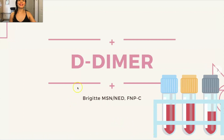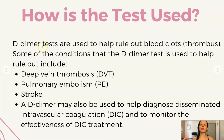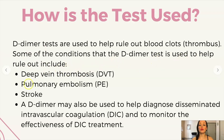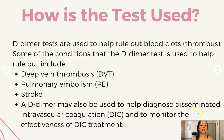All right, today we will be discussing D-dimer. If someone is low risk but you want to rule out a clot, and you do the D-dimer and it's within normal limits, then you can usually safely say this person does not have a blood clot. Conditions that the D-dimer test is used to help rule out include a deep vein thrombosis (a DVT), pulmonary embolism — a clot in the lung — stroke — a clot in the brain — and a D-dimer may also be used to help diagnose disseminated intravascular coagulation.